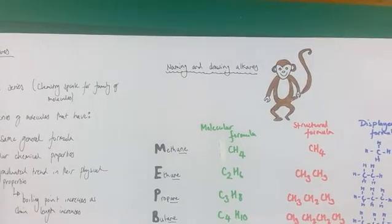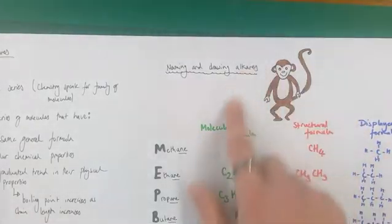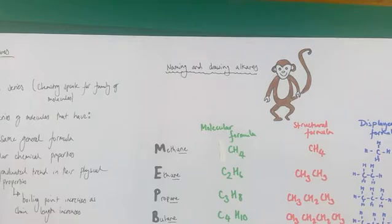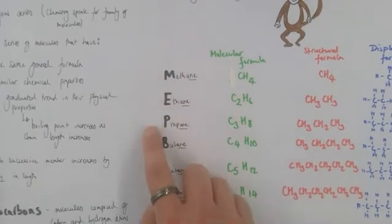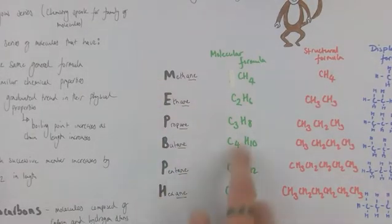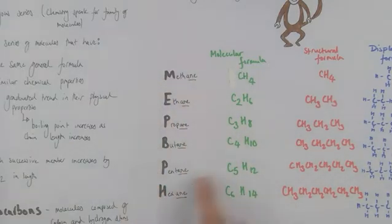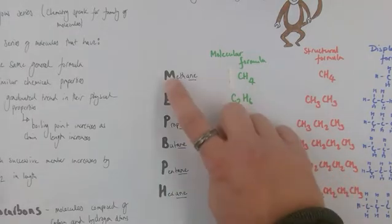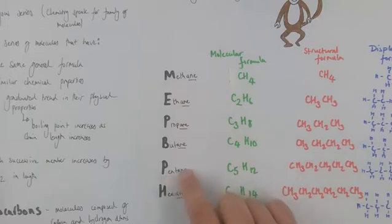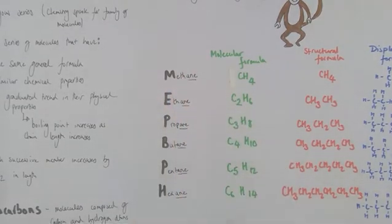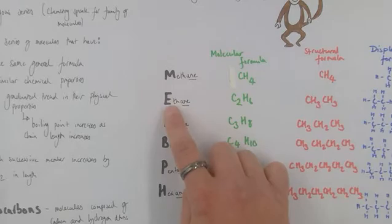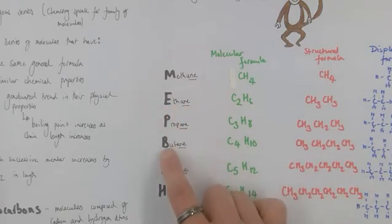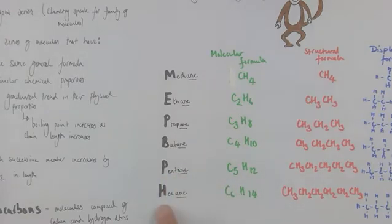Now we're going to think about how we would name and draw alkanes. You may have heard of monkeys being used as a good mnemonic for naming organic molecules like the alkanes. This mnemonic, the monkey picture, is there to remind us that Monkeys Eat Peanut Butter Peacefully and Happily. This naming system allows us to work out the naming of the first six in the series: Methane, Ethane, Propane, Butane, Pentane, Hexane. The prefix stands for or helps us know the number of carbons inside the molecule. So meth stands for one carbon, eth for two carbons, prop for three carbons, bute for four carbons, pent for five carbons and hex for six carbons.